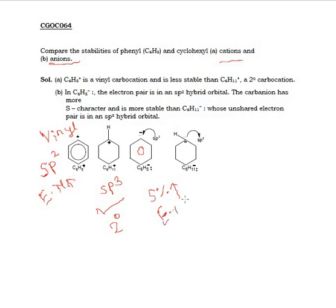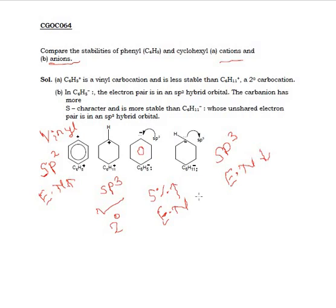The electronegativity will increase, so the negative charge will get more stable. If I talk about the cyclohexyl anion, then this is sp3 hybridized. Due to sp3 hybridization, the electronegativity is not as high because percent s character is lower. So the cyclohexyl anion will be less stable, while the phenyl anion (C₆H₅⁻) will be more stable.